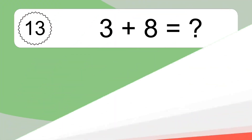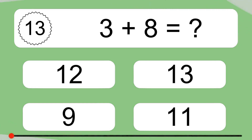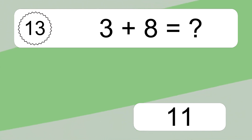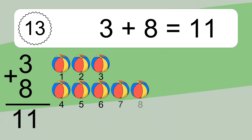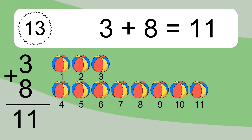3 plus 8 equals what? 3 plus 8 equals 11. Let's count it: 1, 2, 3, 4, 5, 6, 7, 8, 9, 10, 11.